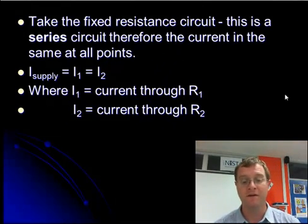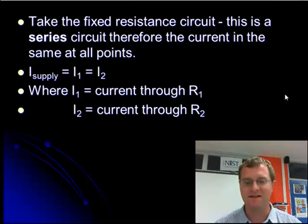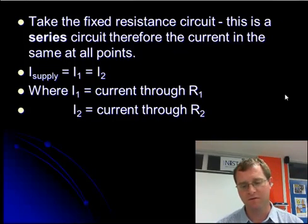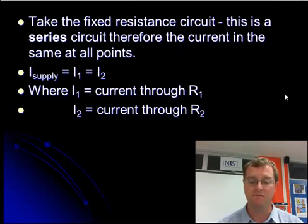So the fixed resistance circuit has a series circuit. Therefore the current running through the supply, resistor 1 and resistance 2, is always going to be the same. So with this bit of knowledge, I can then use that fact to work out that current 1 is going to run through R1. Current 2 is going to run through resistance 2. And then I can apply a little bit of Ohm's law.